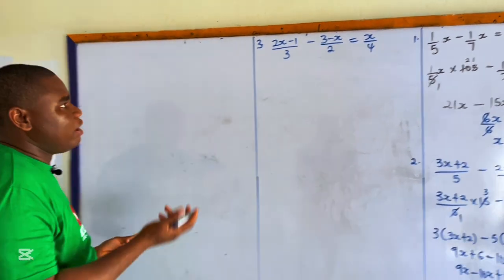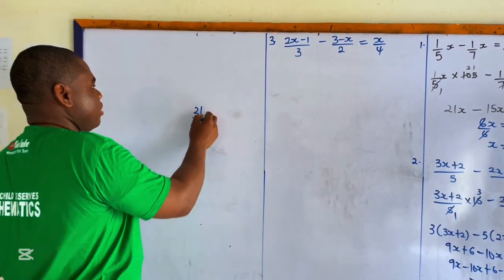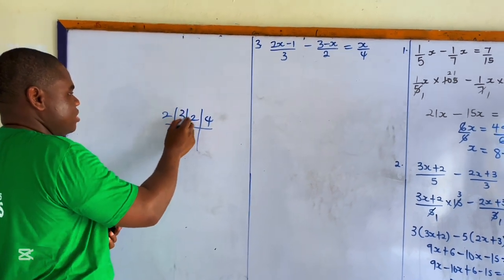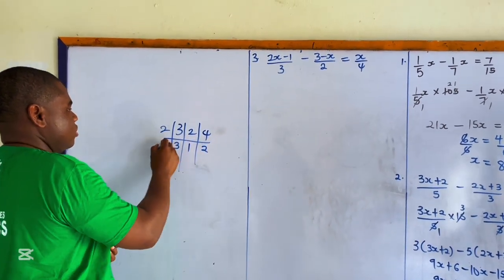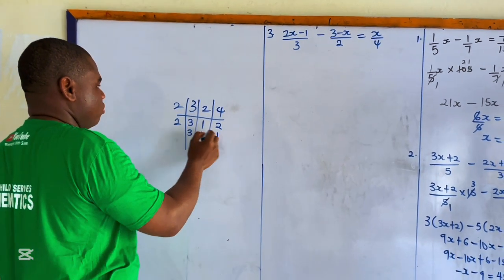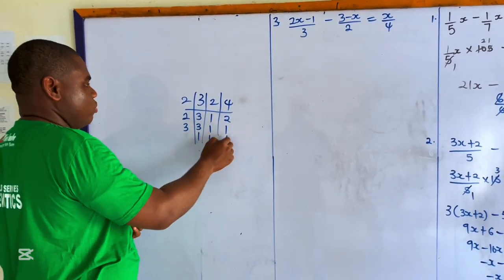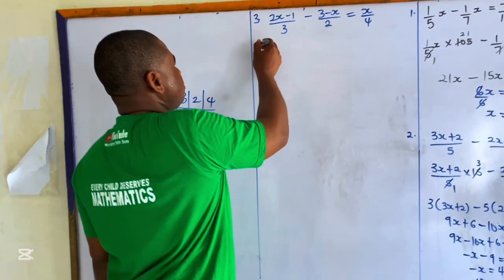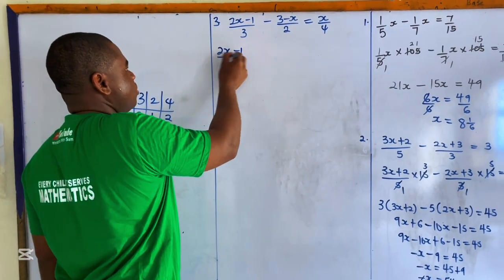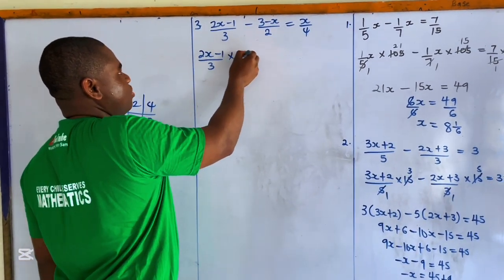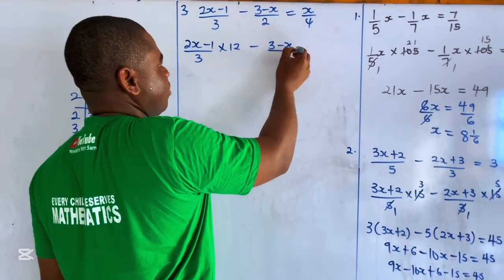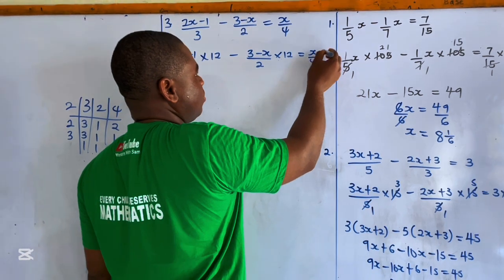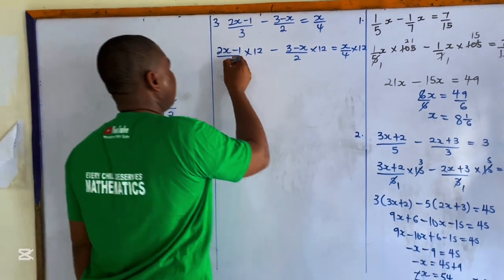Here's how we get 12: 2 goes into 2 and 4, giving 1 and 2; then 3 goes into 3, giving 1. So 2 times 2 is 4, and 4 times 3 is 12. Multiplying through: (2x minus 1) over 3 times 12, minus (3 minus x) over 2 times 12, equals x over 4 times 12.